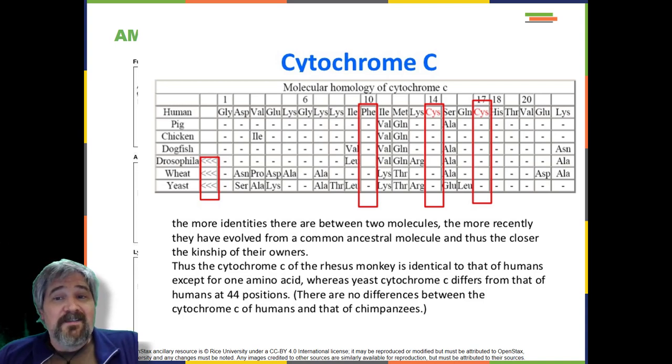On comparing the human and chimpanzee protein sequences, no sequence difference was found. When human and rhesus monkey sequences were compared, a single difference was found in one amino acid. In contrast, human to yeast comparisons show a difference in 44 amino acids, suggesting that humans and chimpanzees have a more recent common ancestor than humans and the rhesus monkey, or humans and yeast.